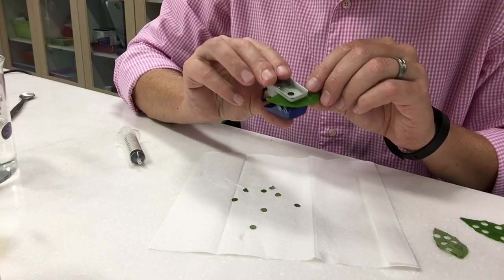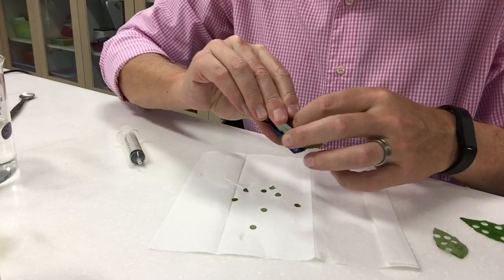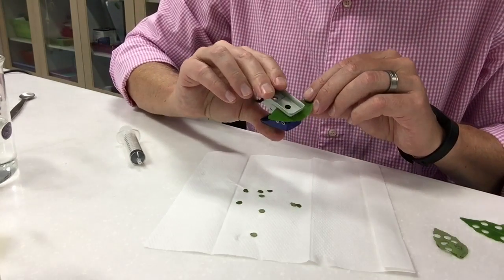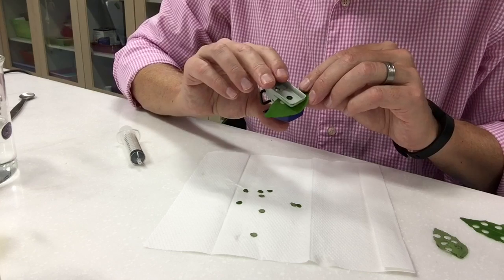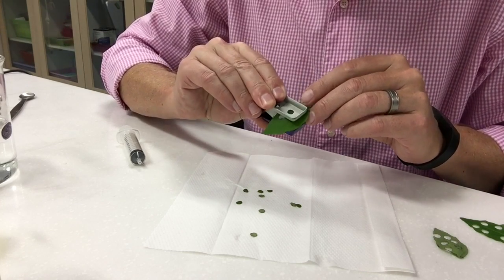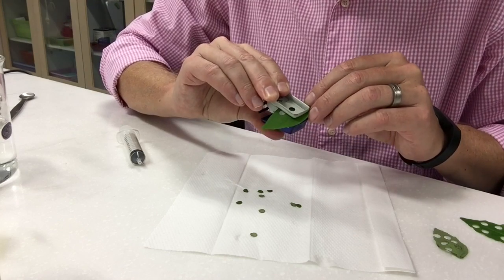So you want to punch about 10 or 12 discs using the hole puncher. So I'll just punch a couple more here. You want to try to avoid getting the large veins involved in the leaf.